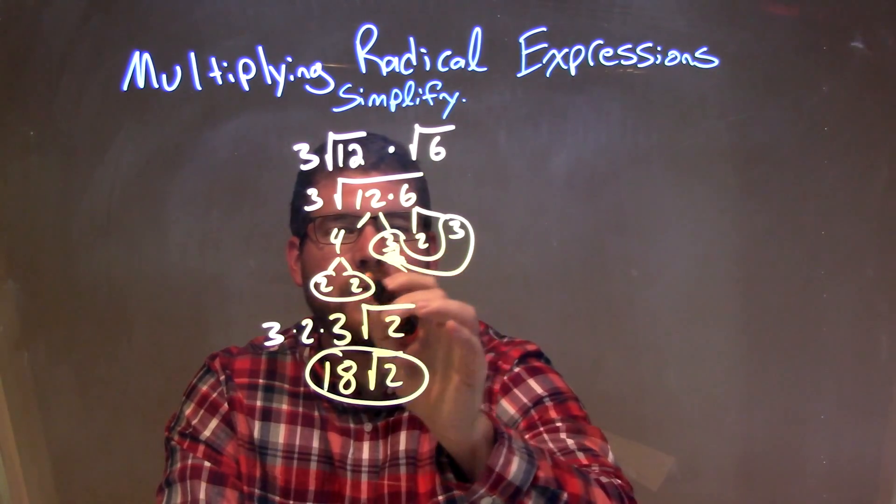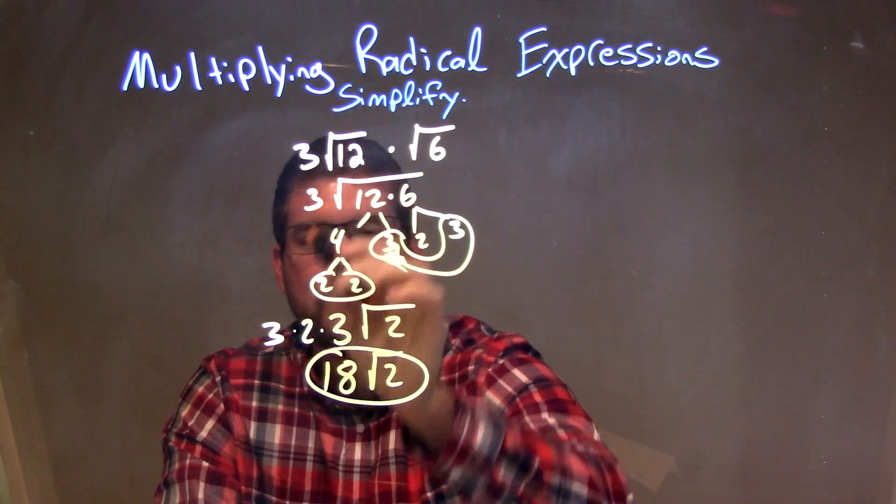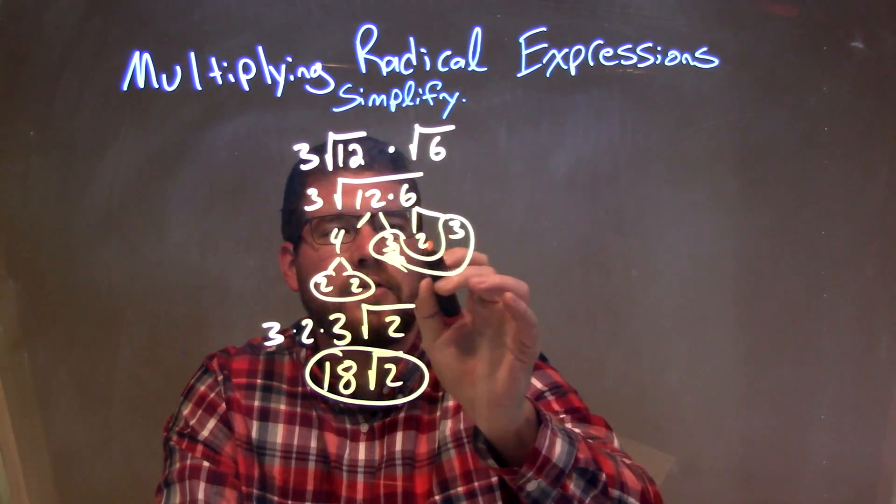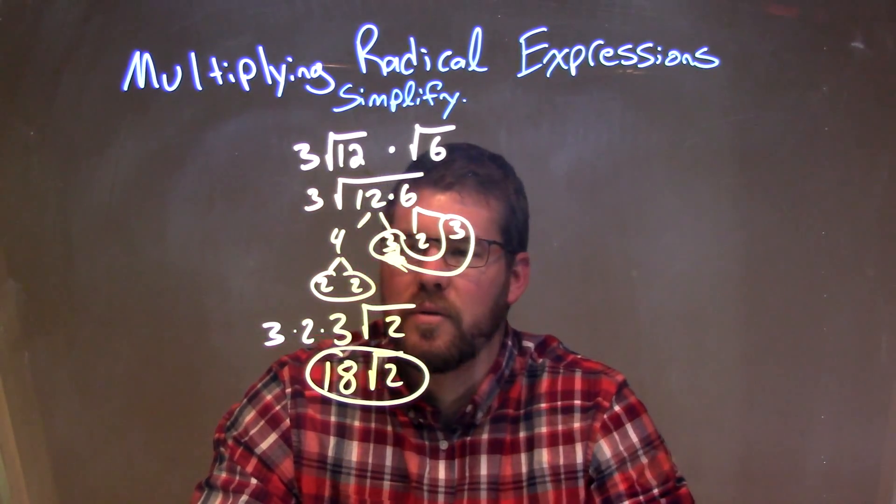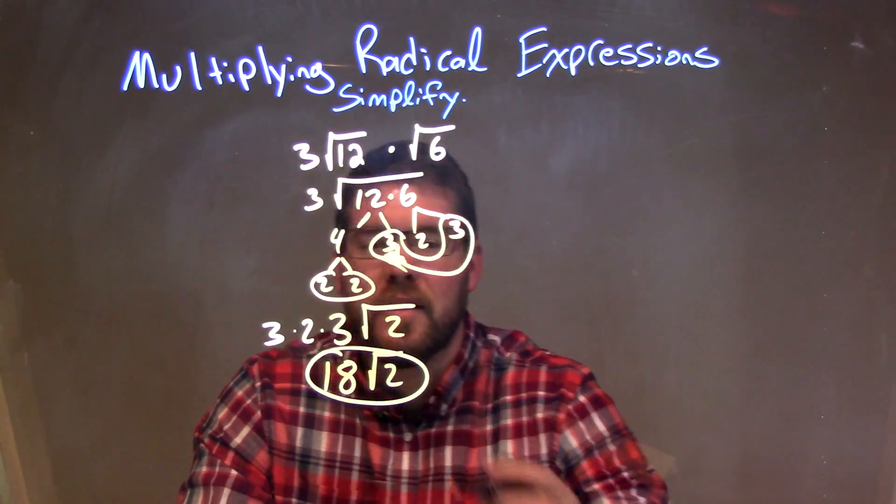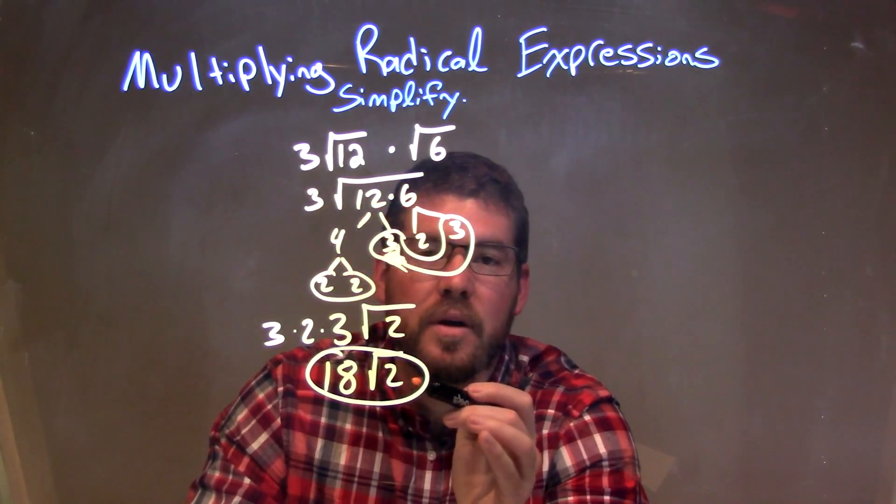There's a 2 out here and a 3 out there, and this 3 just came down. Then this 2 that was just by itself stays on the inside of the square root. We simplified there and got our final answer to be 18 times the square root of 2.